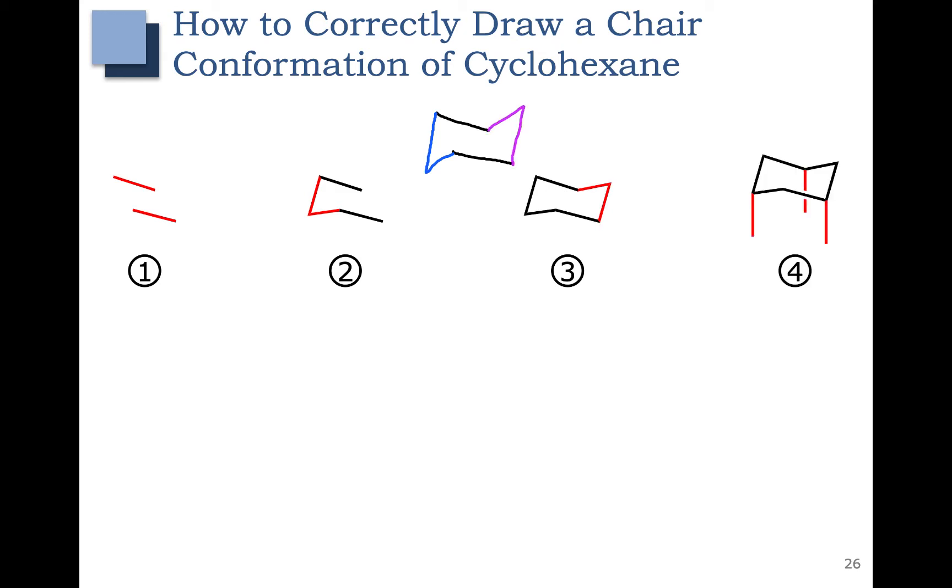Next we need three bonds pointed down, and specifically we need one bond on each carbon that's pointed down. Now we need three bonds pointed up, and in this case we need one on each carbon that's pointed up.